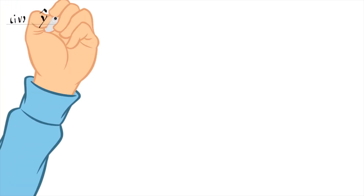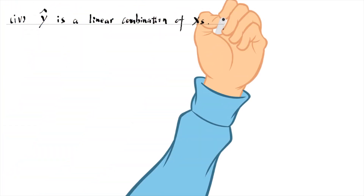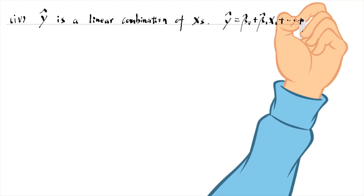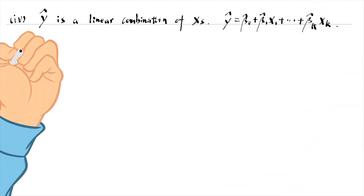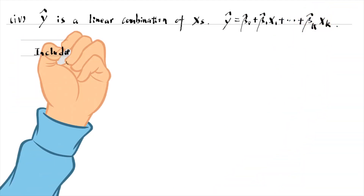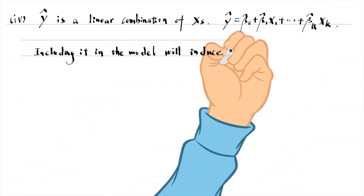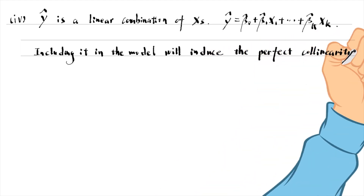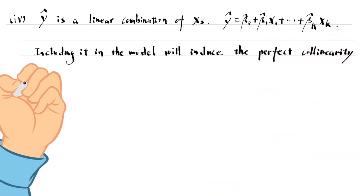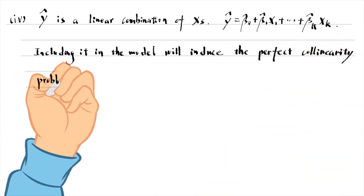The fitted value y-hat is a linear combination of the x variables. Including it in the model will induce the perfect collinearity problem. We should not add it to the model.